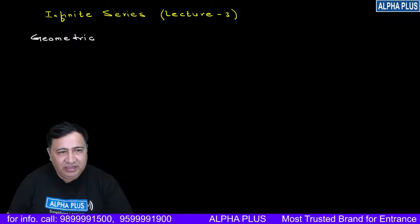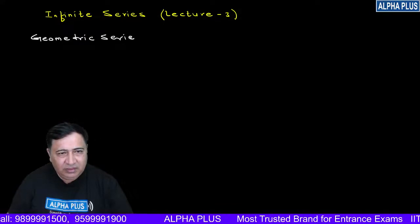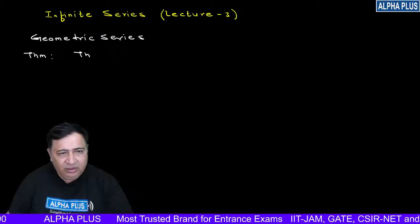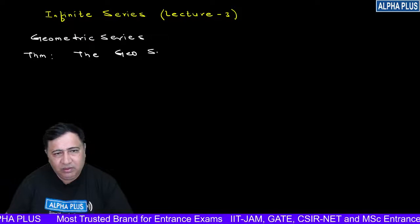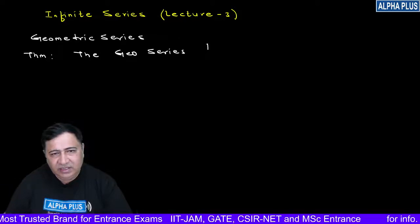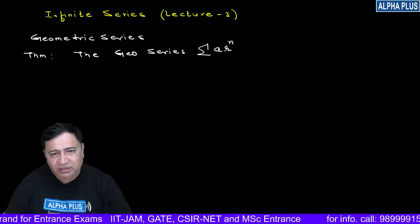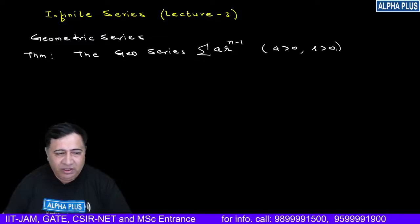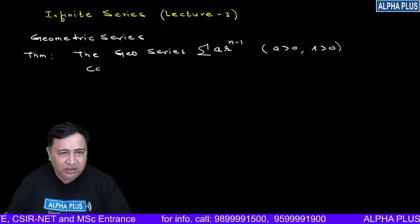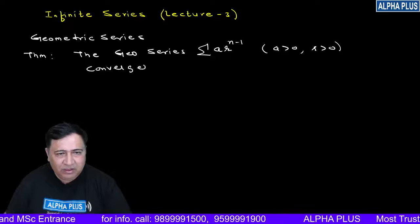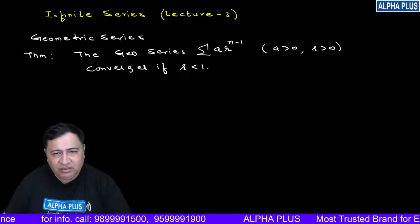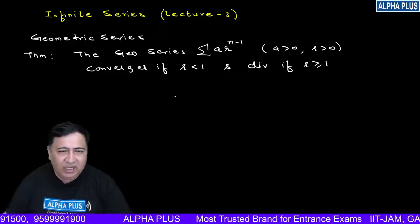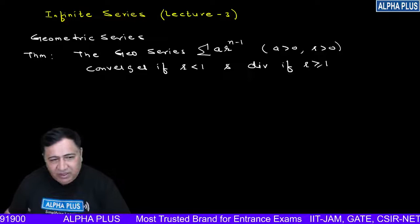So let's start with geometric series. Students, let's first take the statement. Theorem: The geometric series, the series a·r^(n-1) where a is the first term, a is greater than zero, r is greater than zero, r is the common ratio. This series of positive terms converges if the common ratio is less than one and diverges if the common ratio is greater than one.